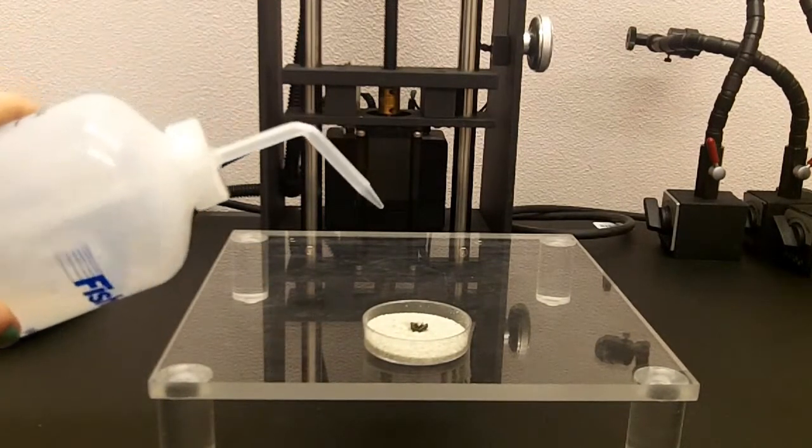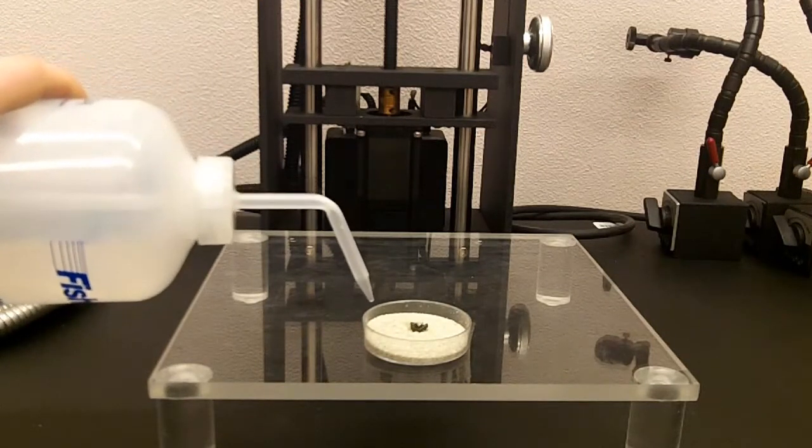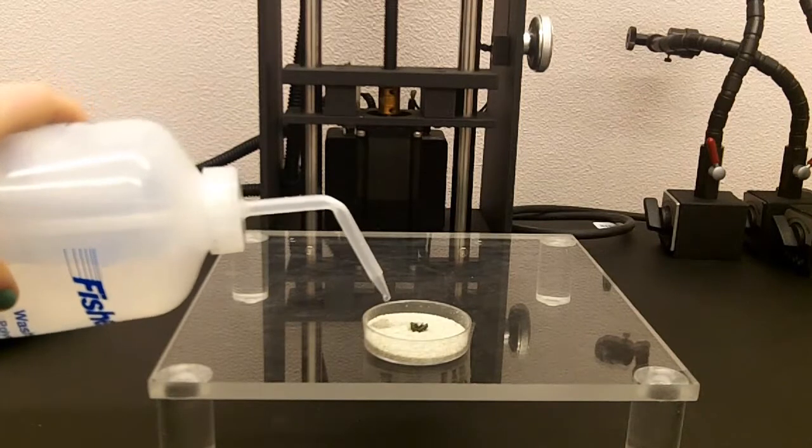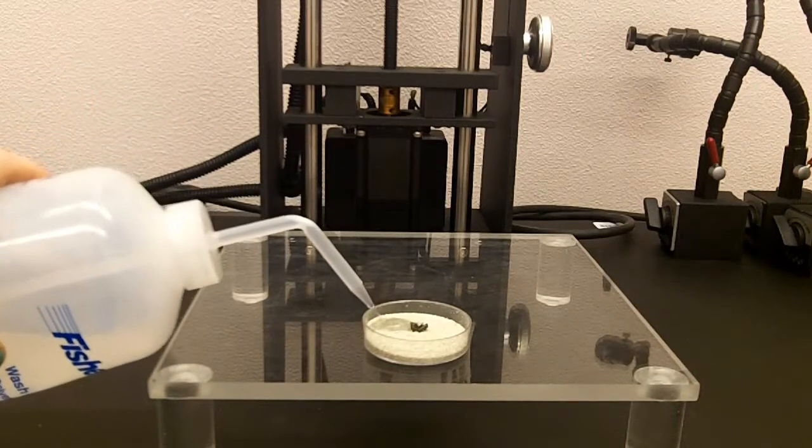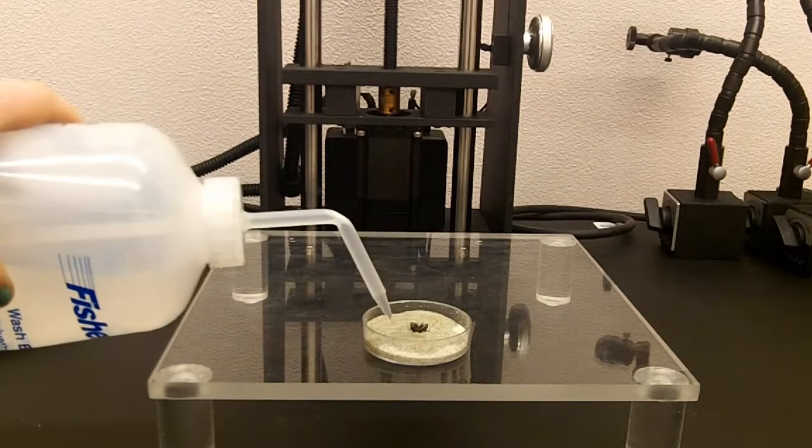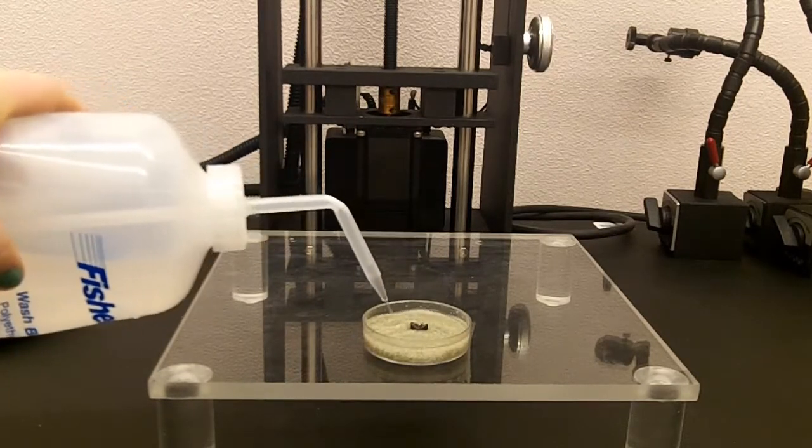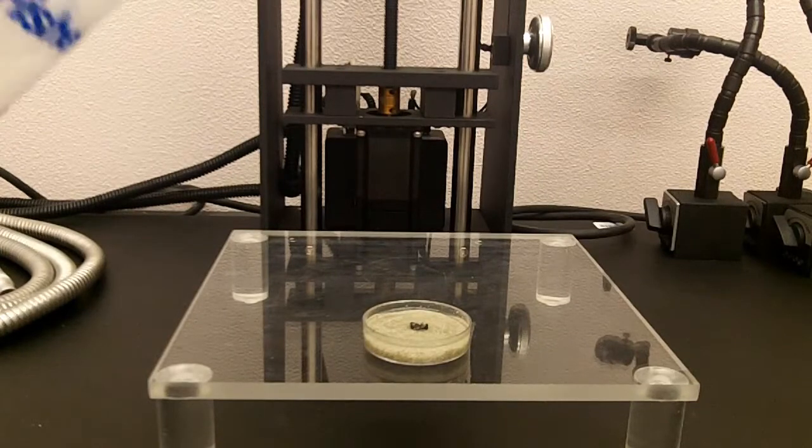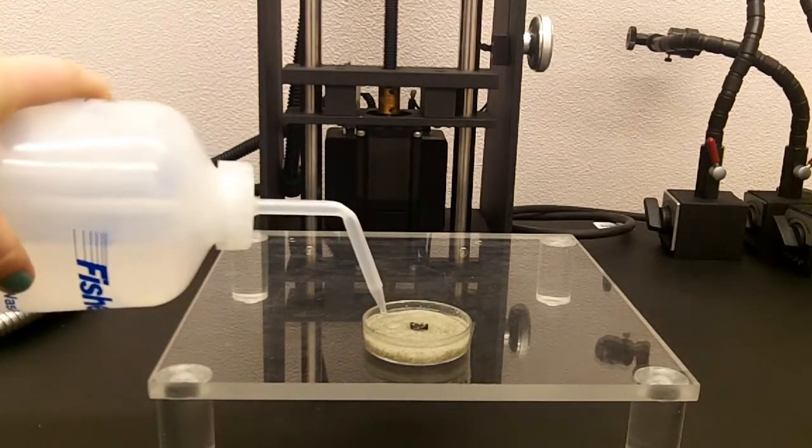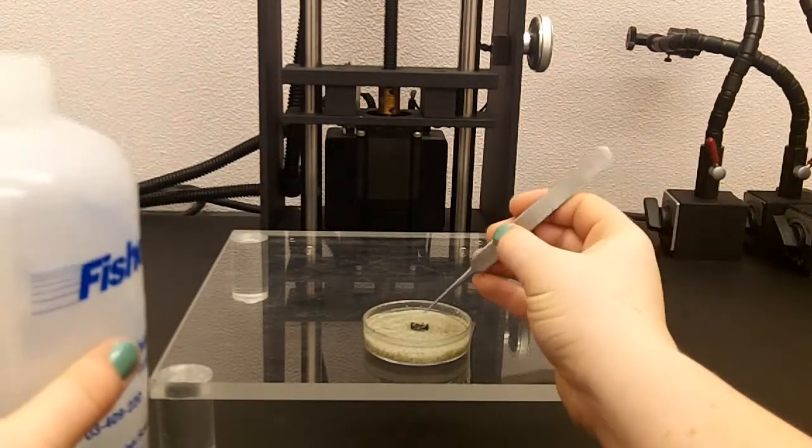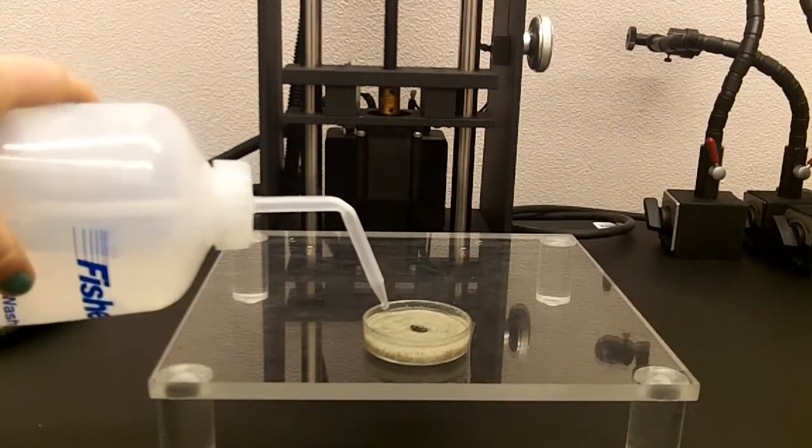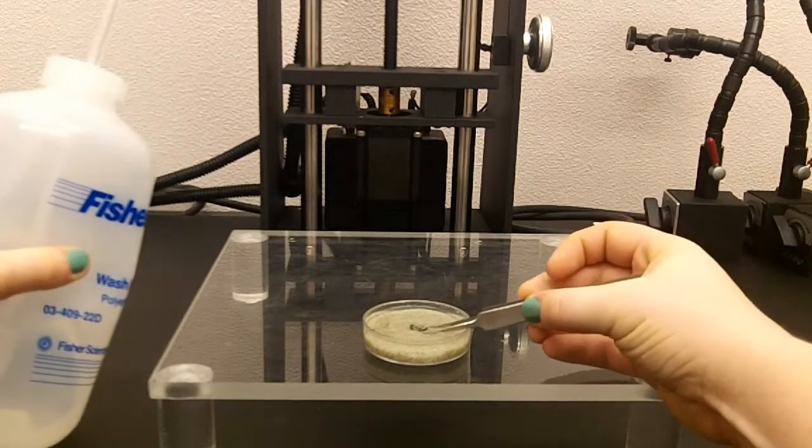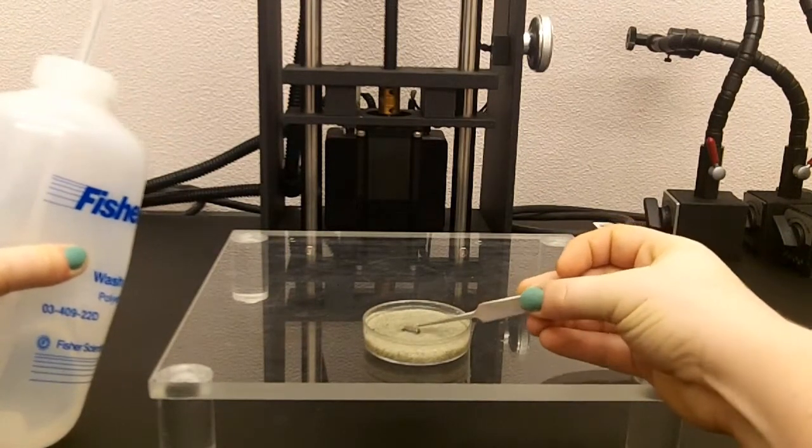You could either fill up the petri dish with ethanol first and then put the specimen in, or do what I've done where I'm putting in ethanol after I've settled the specimen. So you want to fill up the petri dish with enough ethanol so that it completely covers the specimen, but not too much ethanol above the specimen where it will start to distort the specimen in the image.